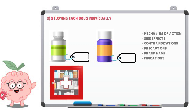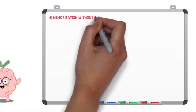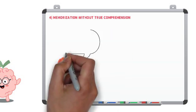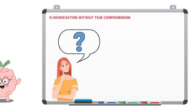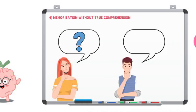Number four, memorization without true comprehension. As a future clinician who will be recommending, prescribing, or educating these medications to your patients, it is important that you truly understand how they work to the point where you can explain it to a child. If you are simply regurgitating information without true comprehension, it is harder to remember the key points about the medication.